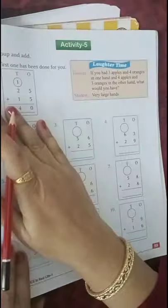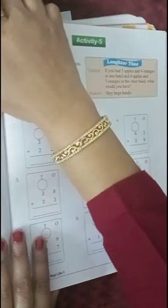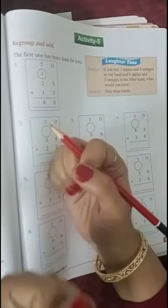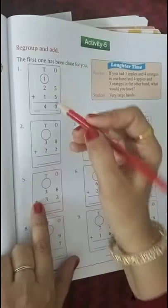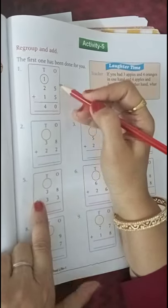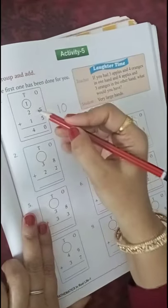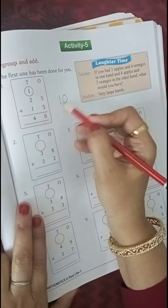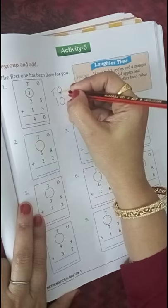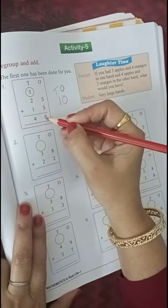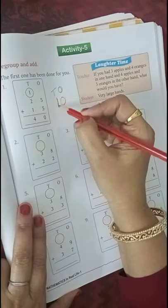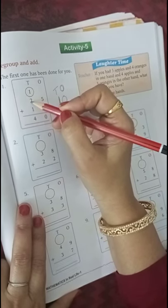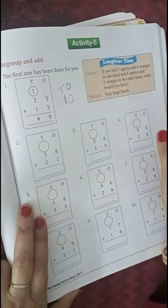Page number 89. You have to regroup and add. The first one has been done for you. 5 plus 5, how much? 5 plus 5 is 10. First step is adding ones. 5 plus 5 is 10. 1 ten, 0 ones. 0 in the ones place. Now the 1 ten will be carried forward. 1 plus 2 is 3, plus 1 is 4. Clear?